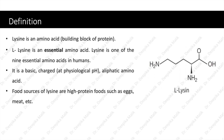Lysine is an amino acid that is a building block of protein. L-lysine is an essential amino acid. Lysine is one of the nine essential amino acids in humans. Essential amino acids cannot be made by the body, so they must be supplied from your diet. Lysine is a basic charged aliphatic amino acid. It acts as a charged molecule at physiological pH. Food sources of lysine are high protein foods such as eggs, meats, etc.